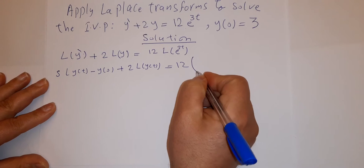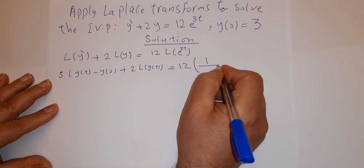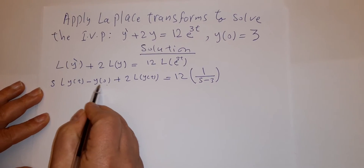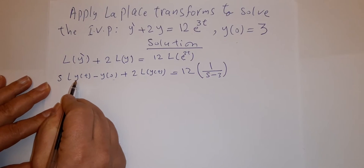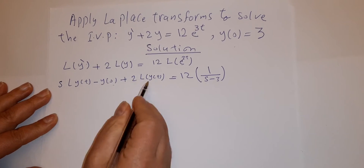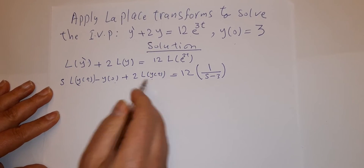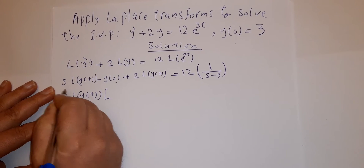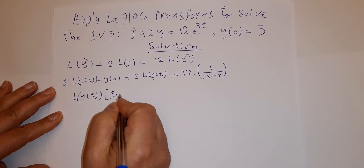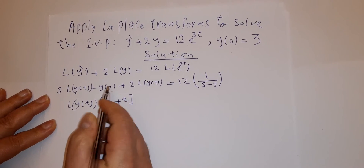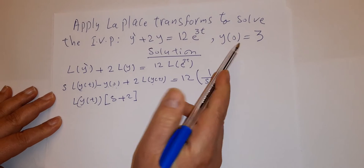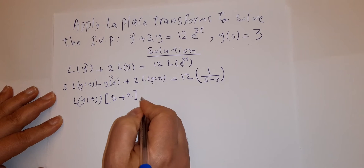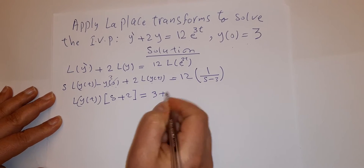We have y(0) = 3. We can take L{y(t)} as a common factor between the first and second terms, giving us L{y(t)}·(s + 2). Since y(0) = 3, we push the negative 3 to the right-hand side.